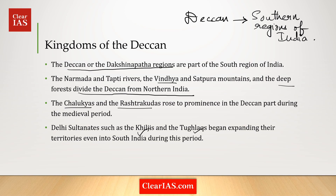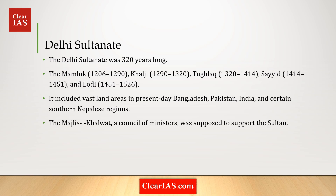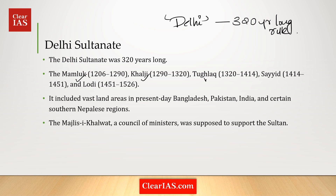The Delhi Sultanate was a 320-year-long Islamic dominion that ruled over a sizable portion of the Indian subcontinent from Delhi. It was ruled by five different dynasties in succession: the Mamluk, the Khilji, the Tughlaq, the Sayyid, and the Lodi. The Delhi Sultanate included vast areas in present-day Bangladesh, Pakistan, India, and certain southern Nepalese regions.